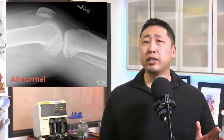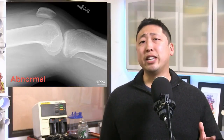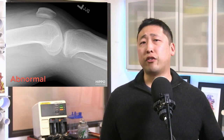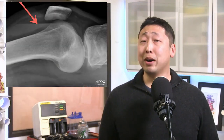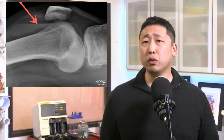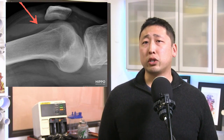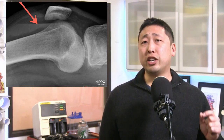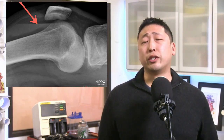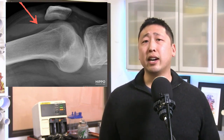The presence of a knee effusion does not mean that there is an intra-articular fracture, but if you see lipohemarthrosis in the suprapatellar pouch with fat and fluid layering out, that highly suggests intra-articular fracture — in this case, a tibial plateau fracture. And that wraps it up for this short. Check out more shorts like this at hippoeducation.com.